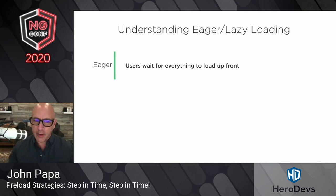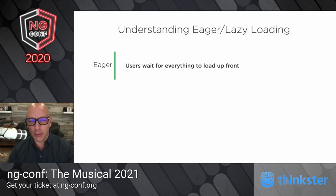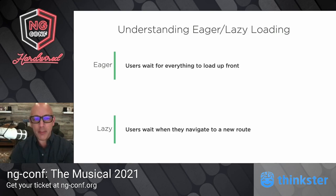We're going to talk about how we can make our applications faster or snappier in step in time. It all starts with a little town called eager and lazy loading. Eager loading means the users are going to wait for everything to load up front. If you have a large application, they're going to wait for everything to come up front, and the time to their first interaction with your app is not going to be so great.